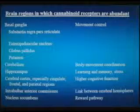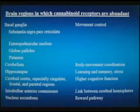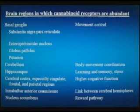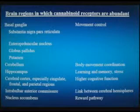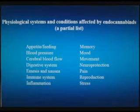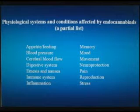They are found in the brain regions where we should expect to see them — regions that have to do with movement control, coordination, learning and memory, stress, and cognitive function. The physiological systems and conditions affected by endocannabinoids represent only a partial list.